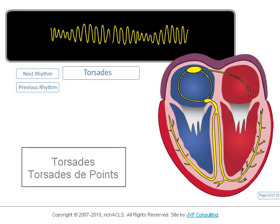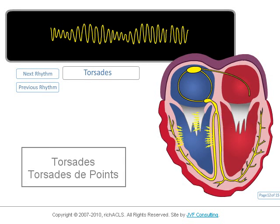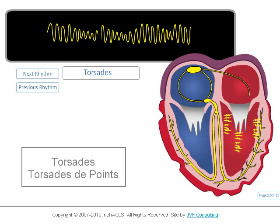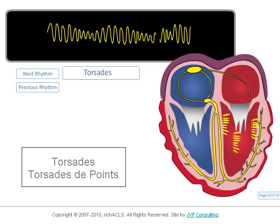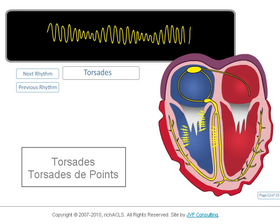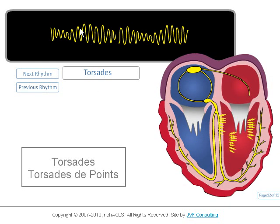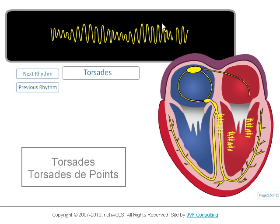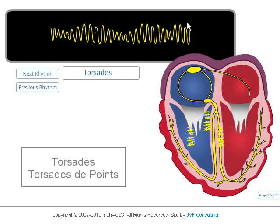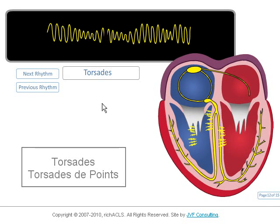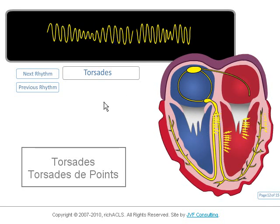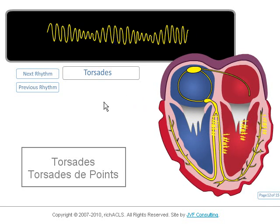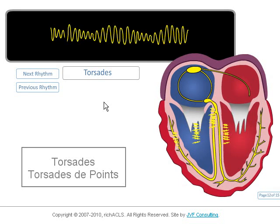Here is torsades, or more formally, torsades de pointes. This unique rhythm is characterized by a constantly changing rhythm amplitude. Torsades de pointes means "twisting of the points," which would be analogous to the appearance of a twisting DNA helix or a twisted strip of paper.